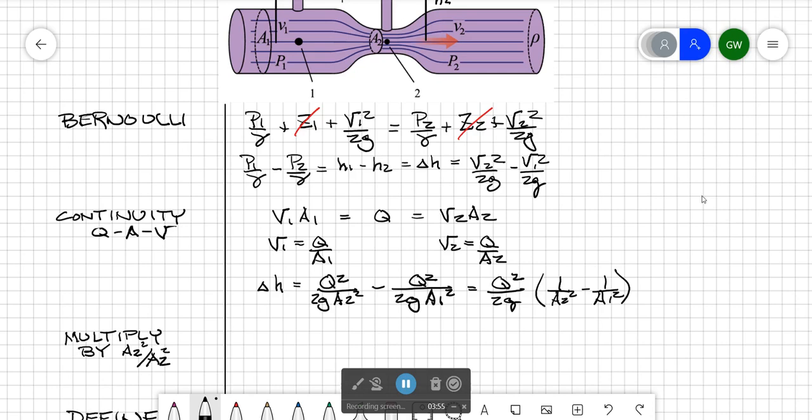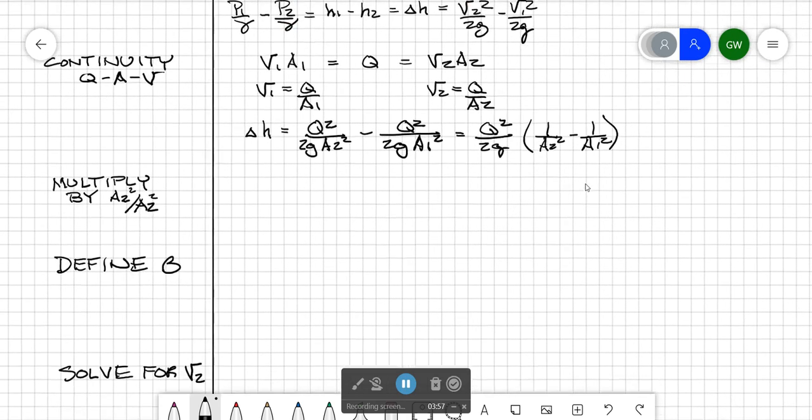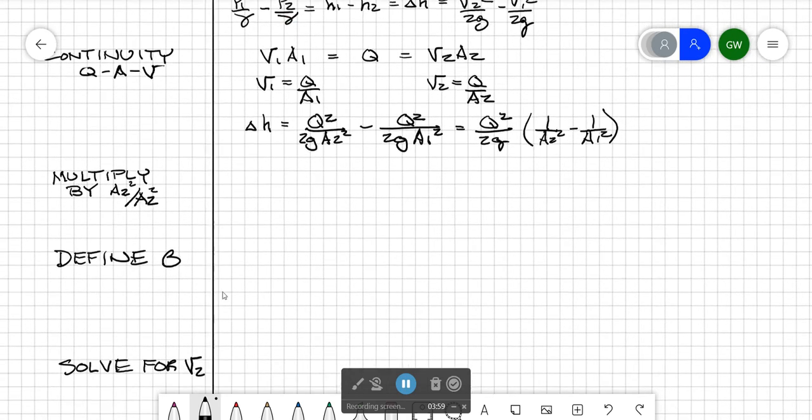When we deal with algebra we're allowed to multiply by 1 and we're going to multiply by a2 squared over a2 squared just the right hand side. So we get delta h equals q squared over 2g and we'll put a2 squared down in the denominator and that gives us 1 minus a2 squared over a1 squared.